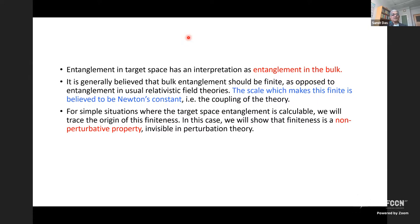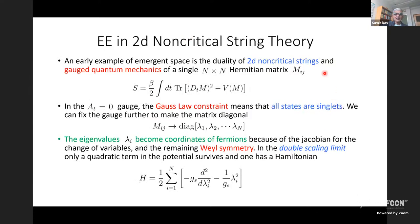It therefore follows that entanglement in the target space in these theories has an interpretation as entanglement in the bulk. It is generally believed that bulk entanglement should be finite, as opposed to entanglement in usual relativistic field theories, and that the scale which makes this finite is Newton's constant — the coupling of the theory. We will argue that for simple situations when the target space entanglement is calculable, the finiteness is a non-perturbative property, completely invisible in perturbation theory.